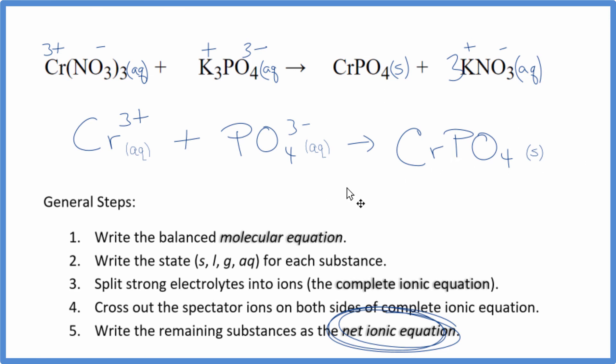So this is the balanced net ionic equation for Cr(NO3)3 plus K3PO4. You'll note charge is conserved. We have a three plus and a three minus. That gives us a net charge of zero. This is a neutral compound net charge of zero.